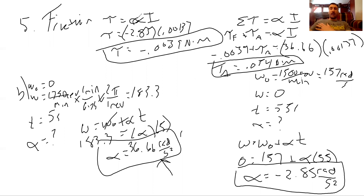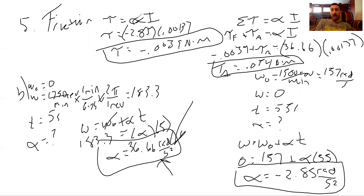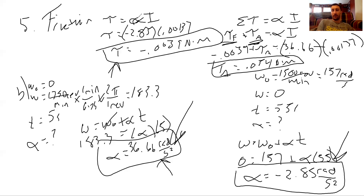To summarize problem five: we found I, then the required acceleration, then the acceleration due to friction, then the friction torque, and finally the applied torque needed to achieve the target acceleration.